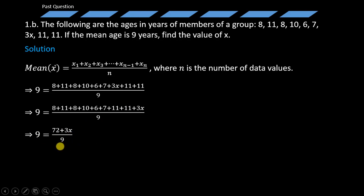Normally when solving questions like this, it is good to eliminate the denominator. So what do we do? We multiply both sides by 9, as you can see on the screen.